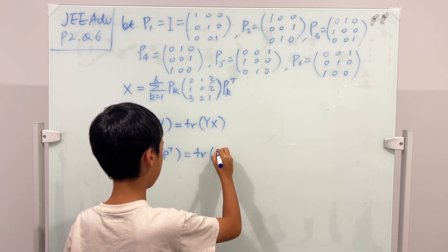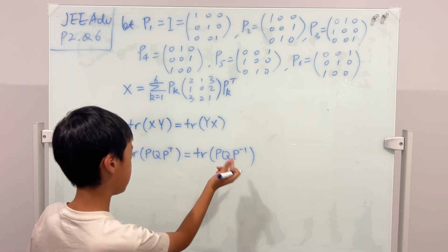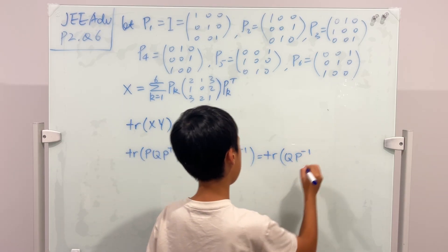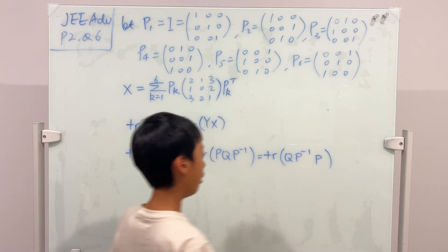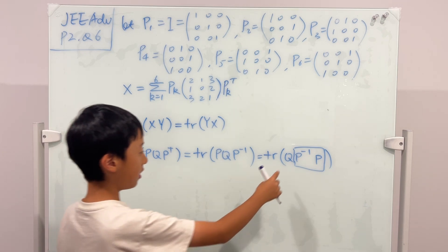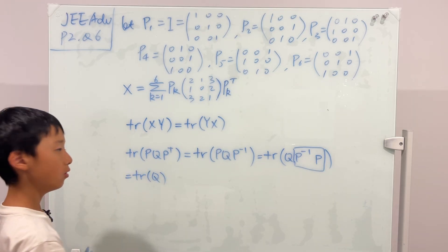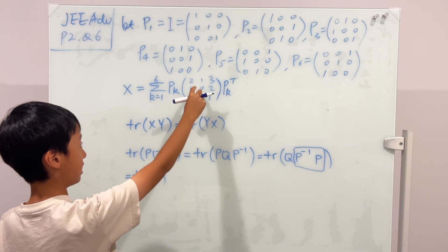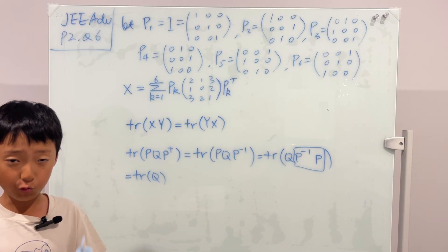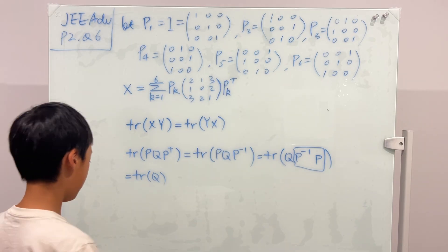Using the trace identity, we swap: trace(P·Q·P⁻¹) = trace(Q·P⁻¹·P) = trace(Q·I) = trace(Q). P⁻¹·P is just the identity, so it's equal to trace(Q), which is 3. If we add six of these, the trace will be 3 × 6 = 18. That gives us answer C and answer B.